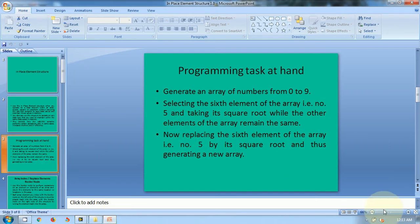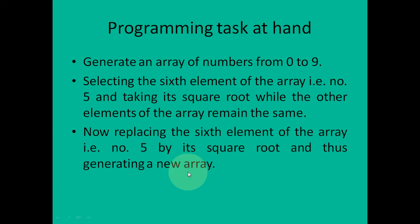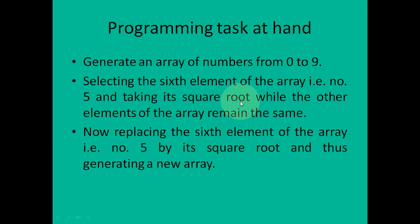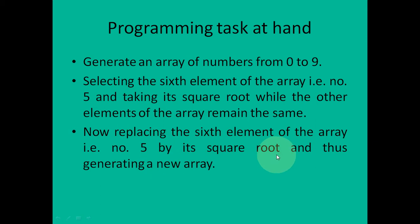So let's see the programming task at hand. With this example, I will be showing what is the use of this in-place element structure. The programming task is: generate an array of numbers from 0 to 9, select the sixth element of the array — that is index number 5 — and take its square root while the other elements of the array remain the same. Then replace the sixth element (index number 5) with its square root, thus generating a new array.